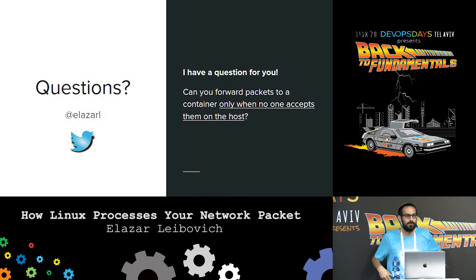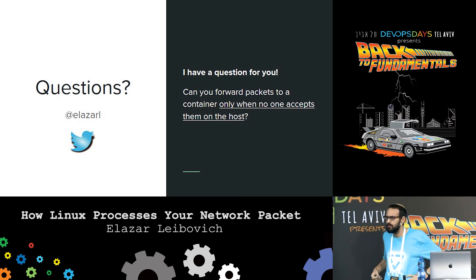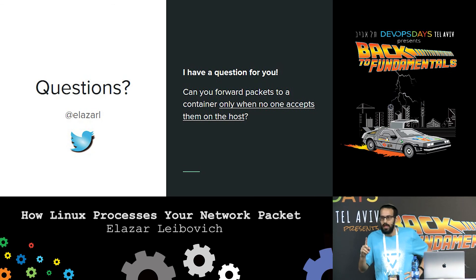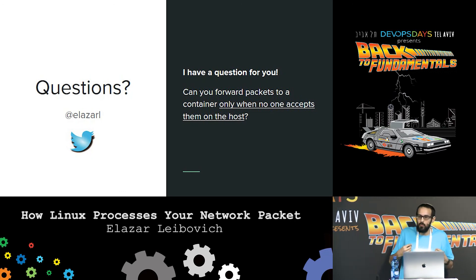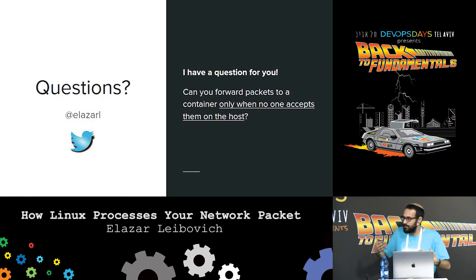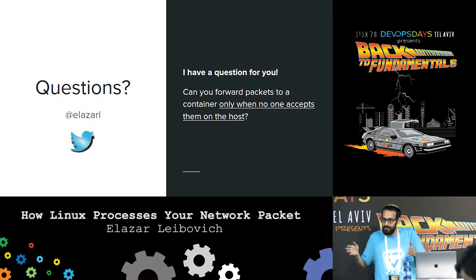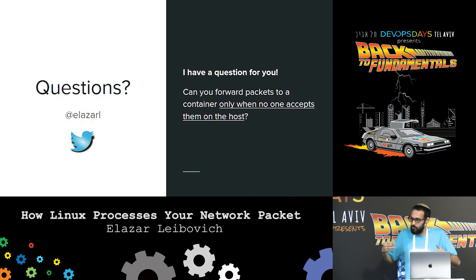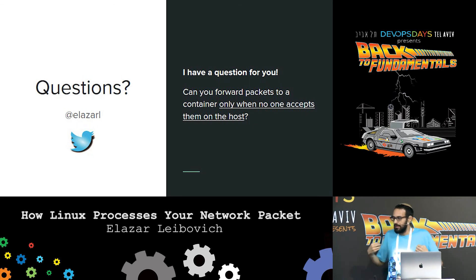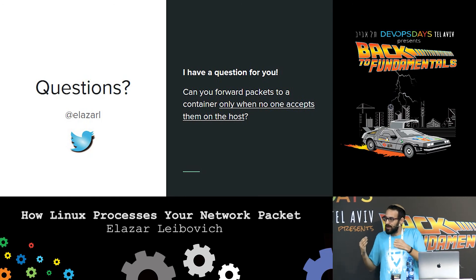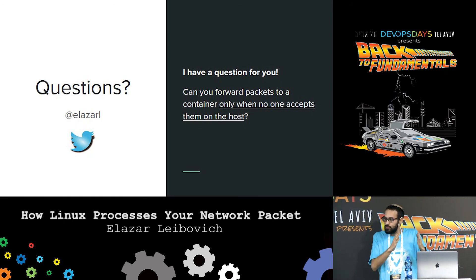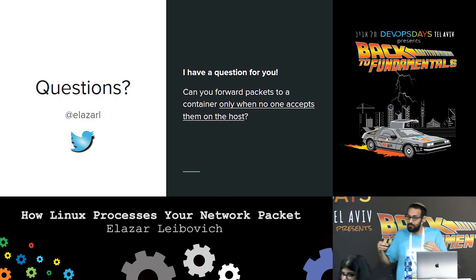Now if anyone has a question, I'll be happy to answer. Let me clarify the puzzle: I don't want to poll to find out if someone is listening. I want that when I start an application listening to packets on port 8000, the application would get those connections. But the moment I kill this application, those same packets would be forwarded to my container automatically — I don't want to detect it myself. I want it done automatically. Thank you very much.